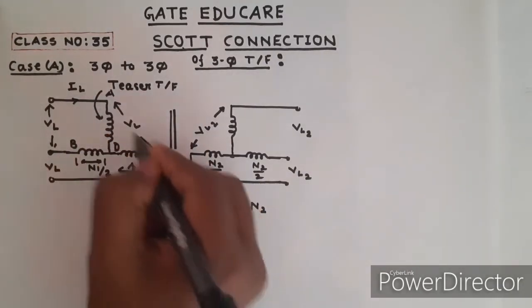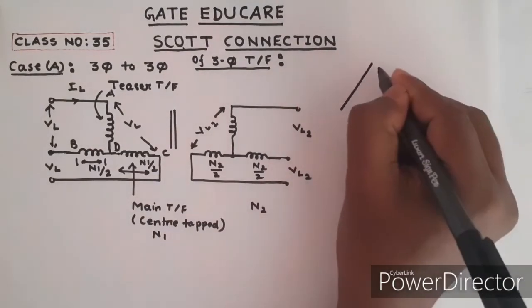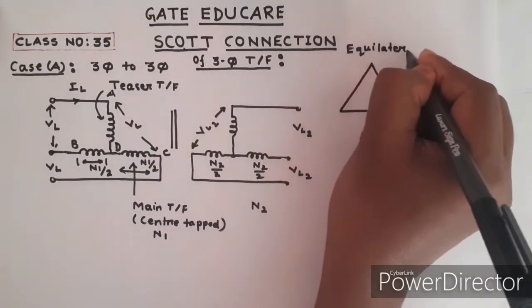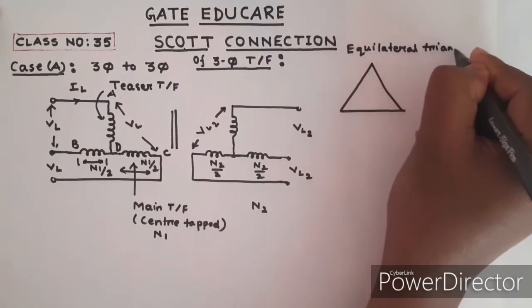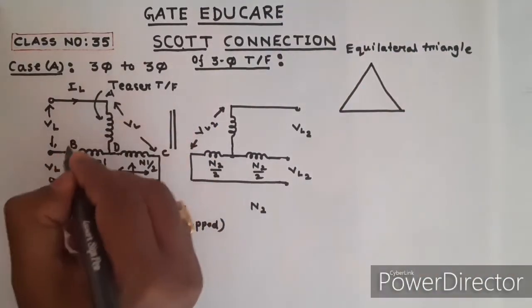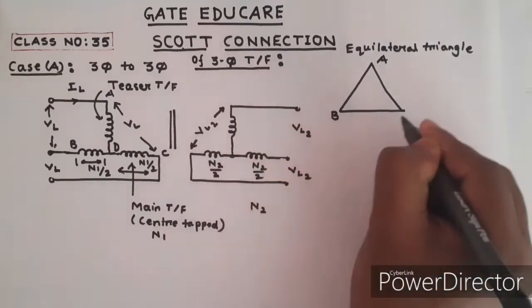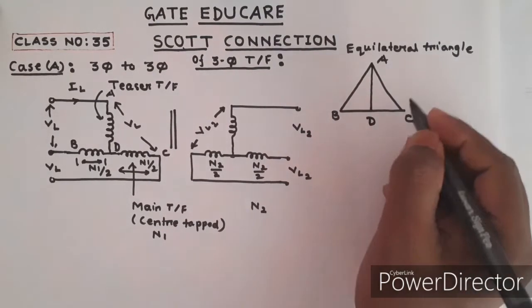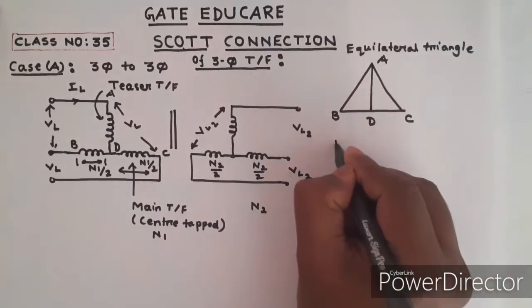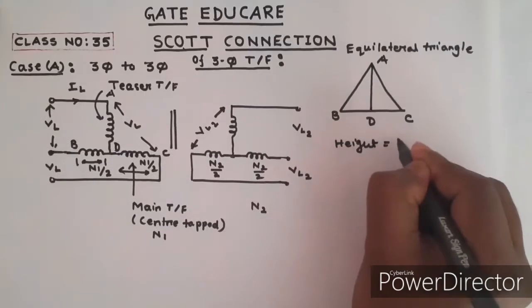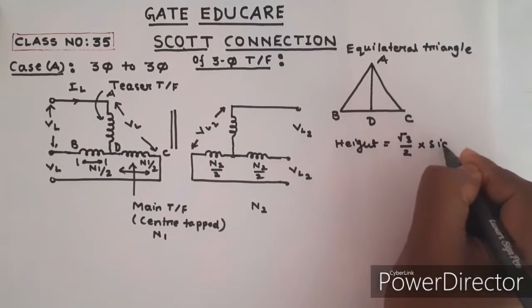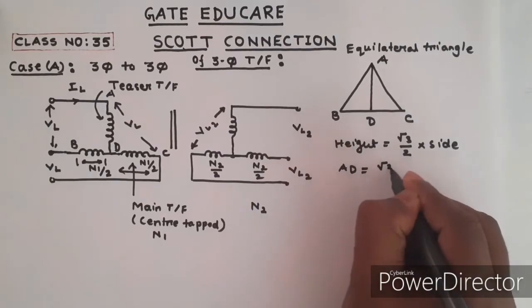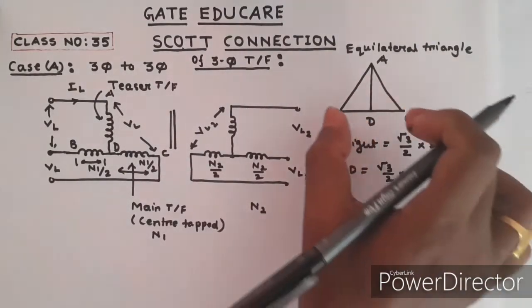Points A, B, and C form an equilateral triangle. Drawing this equilateral triangle, A, B, and C are the three vertices, and AD is the height from vertex A to side BC. From this equilateral triangle, the height AD equals root 3 by 2 times one side, so AD equals root 3 by 2 times BC.